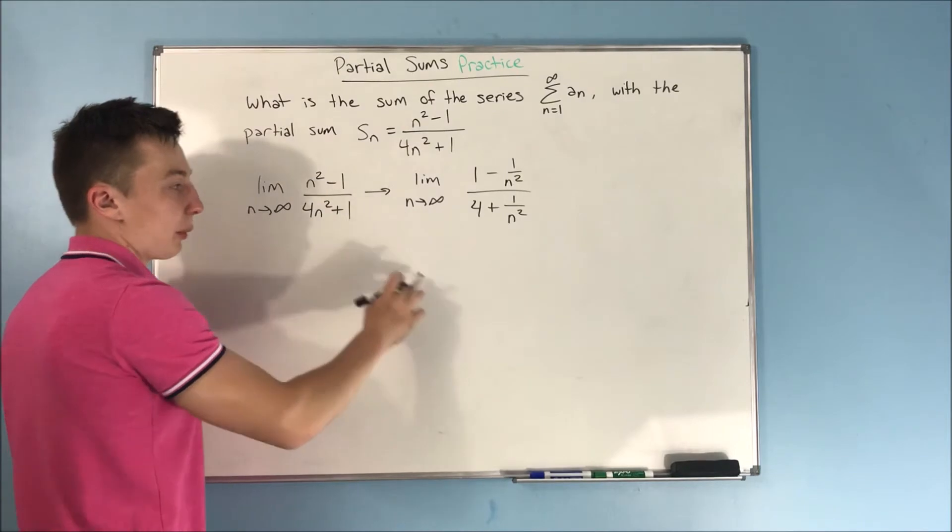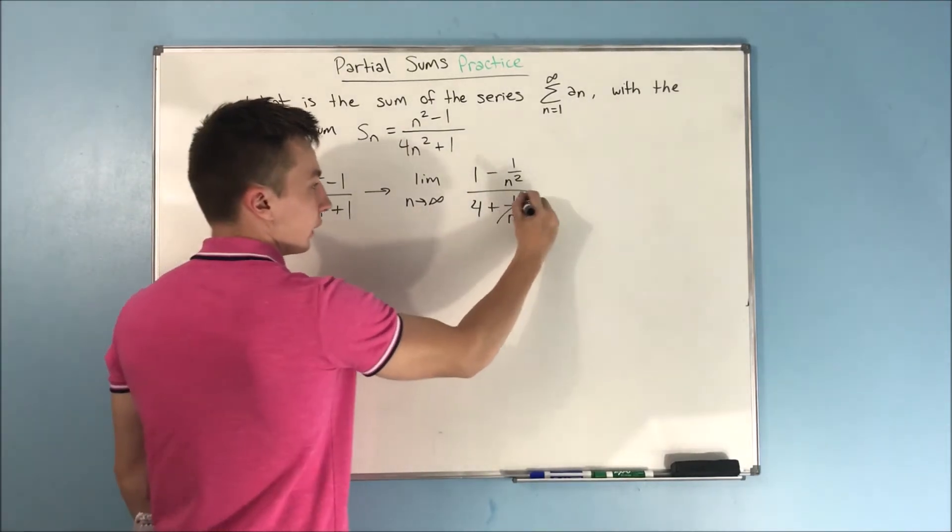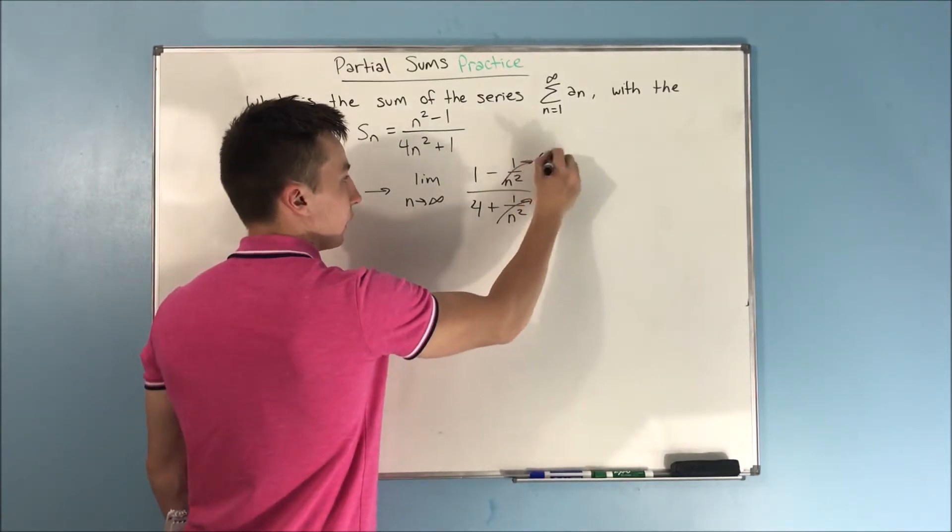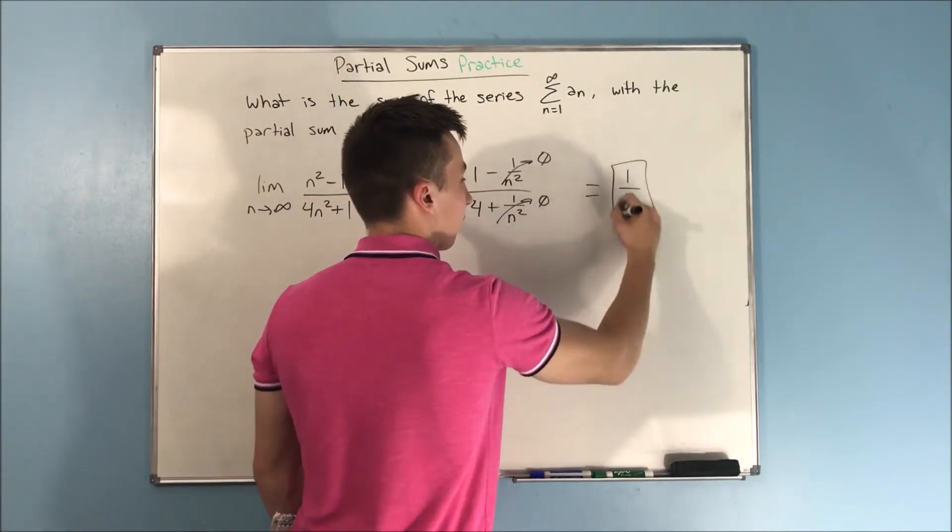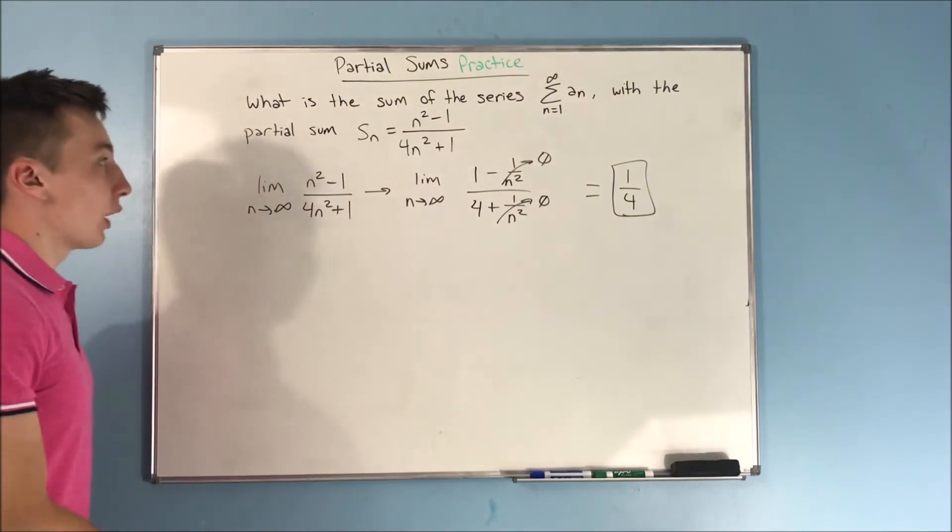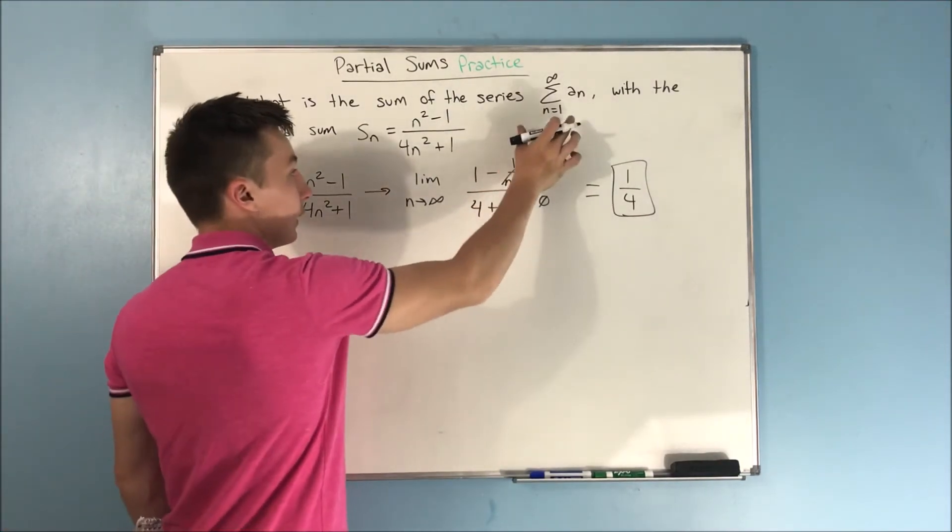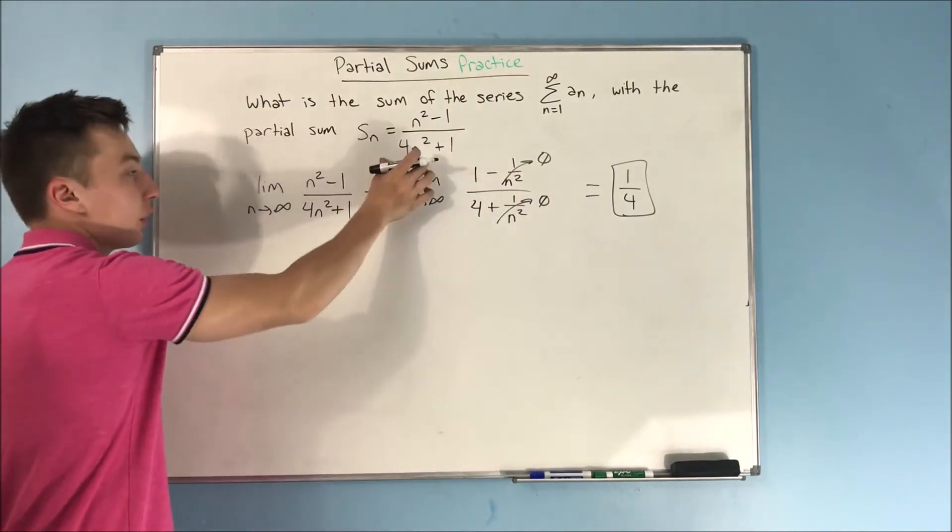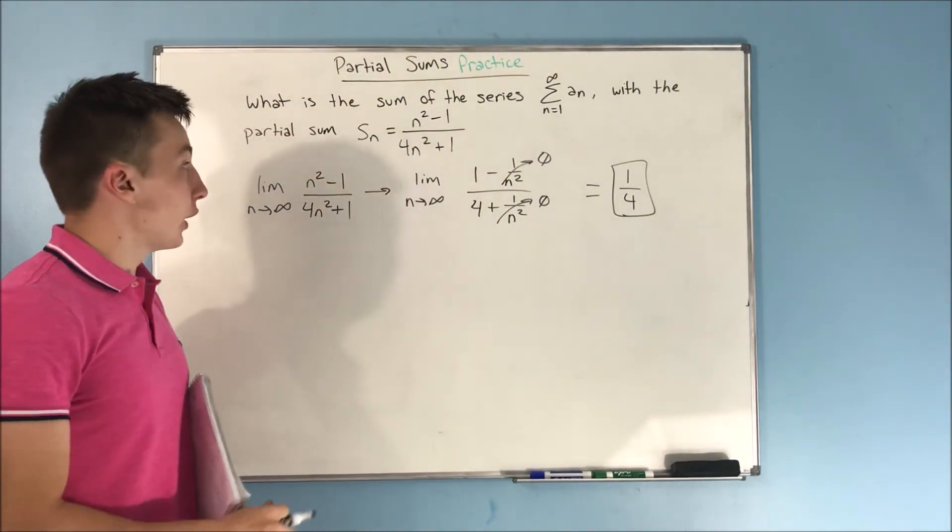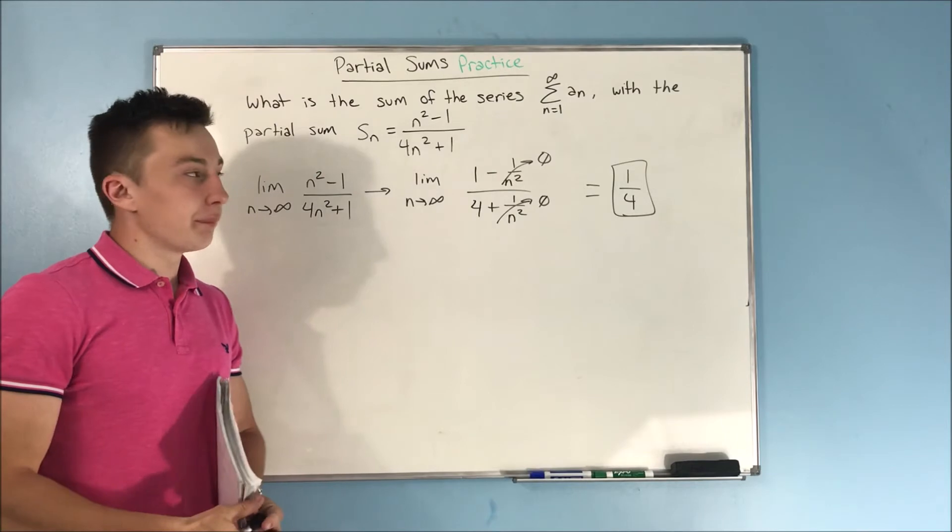So if n approaches infinity, well, then this fraction goes to 0, this fraction goes to 0, so we're left with just 1 fourth. So we're able to prove that this series is convergent, and it converges to 1 fourth because we have this equation for the nth partial sum. Alright, so that's going to do it for this video.